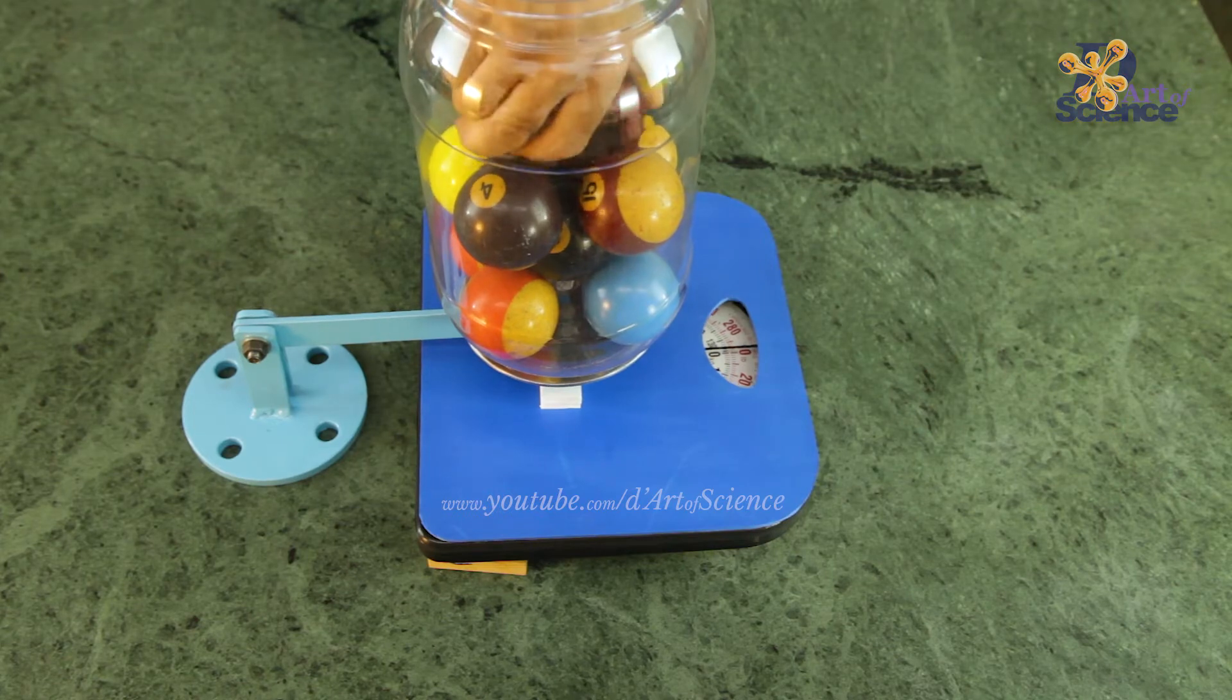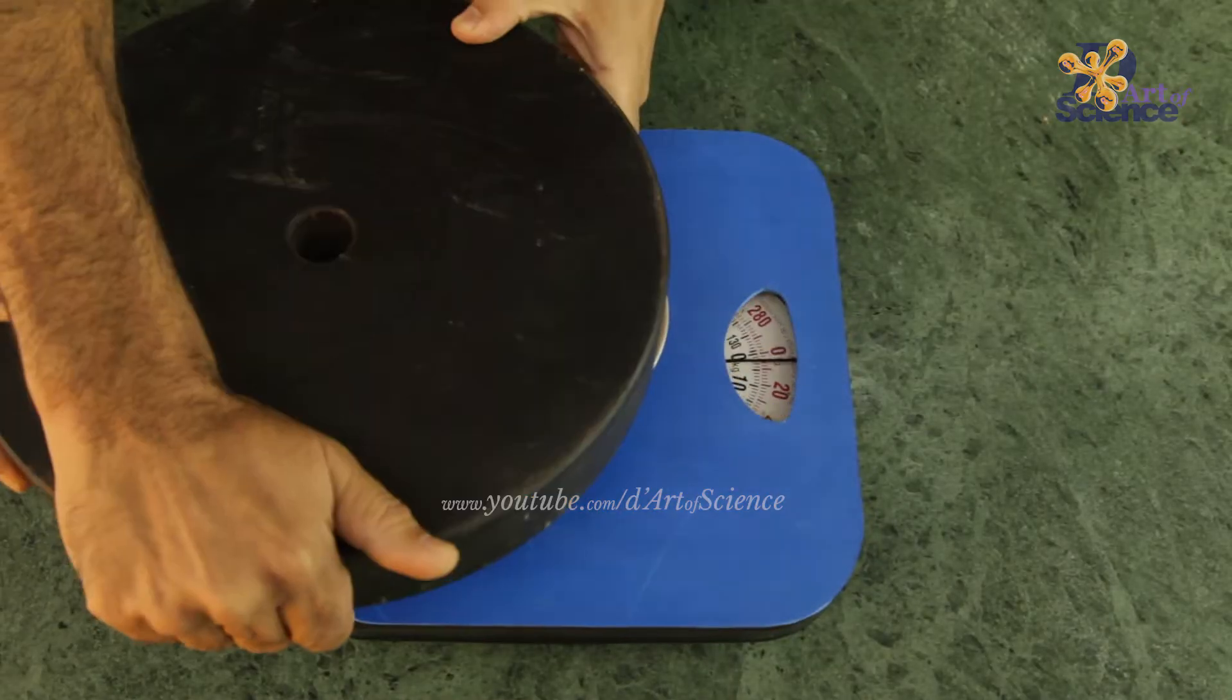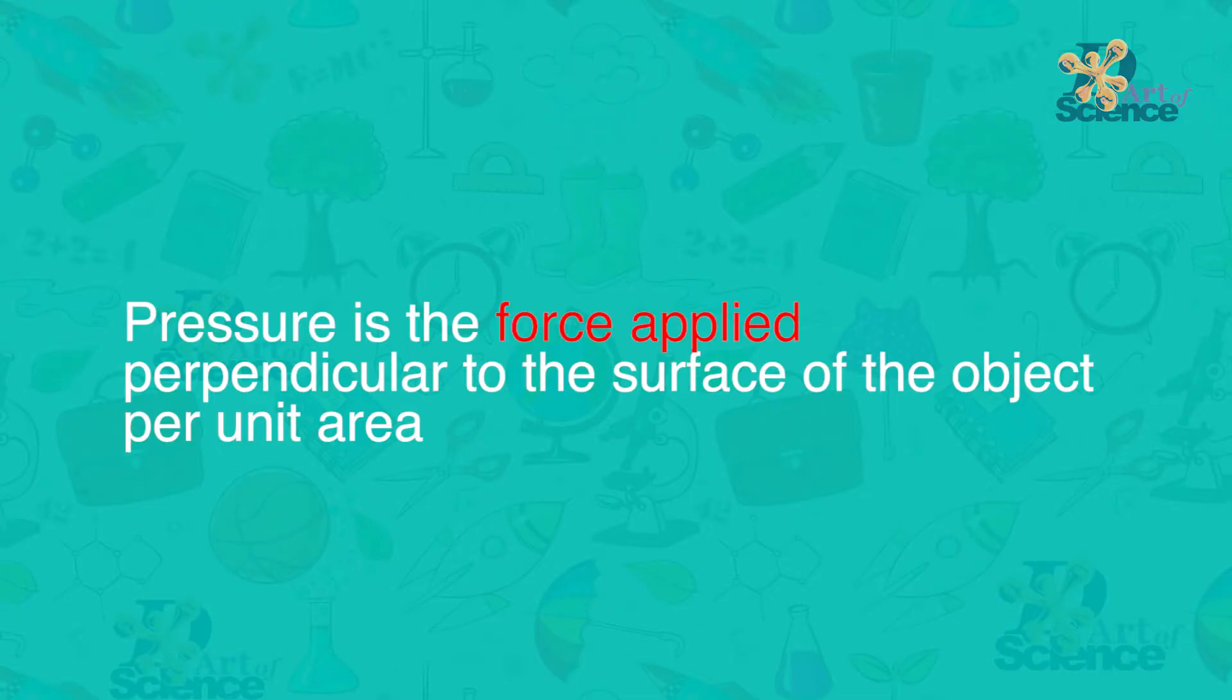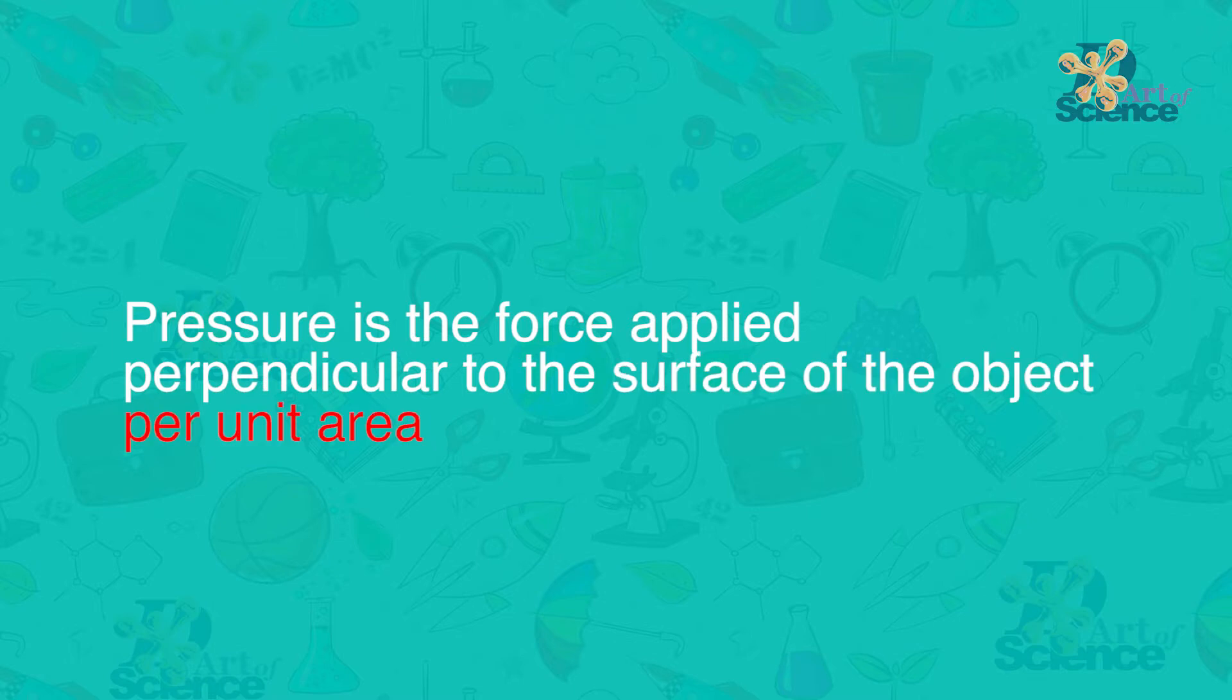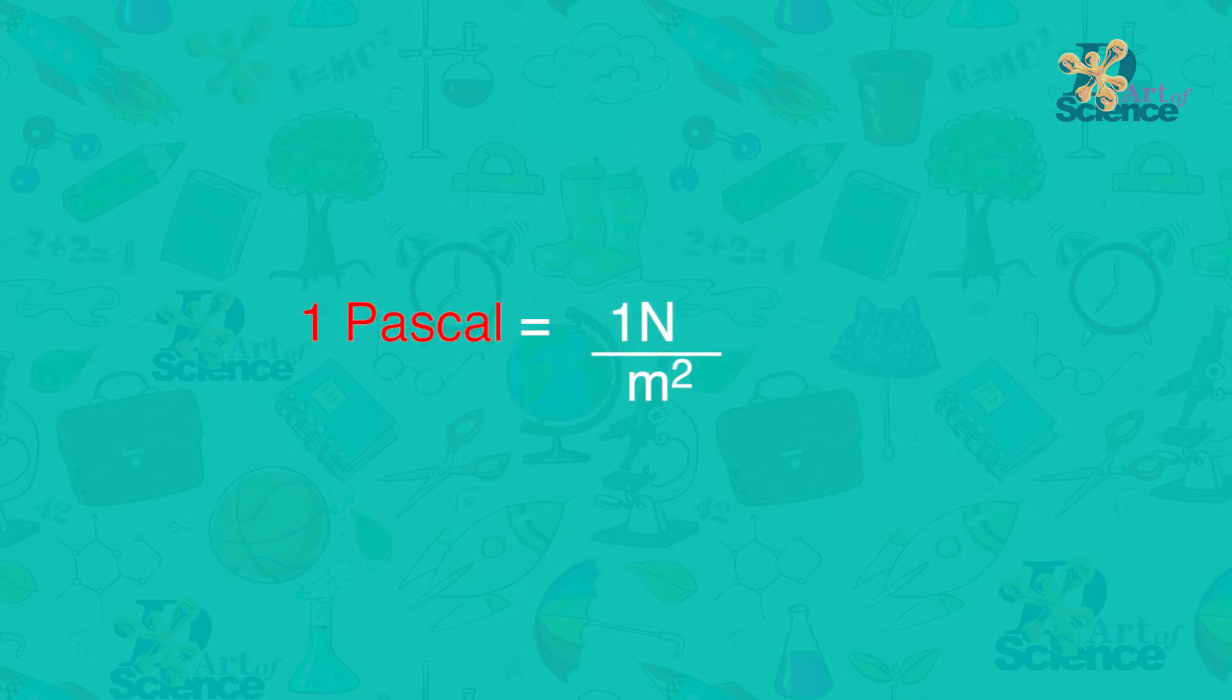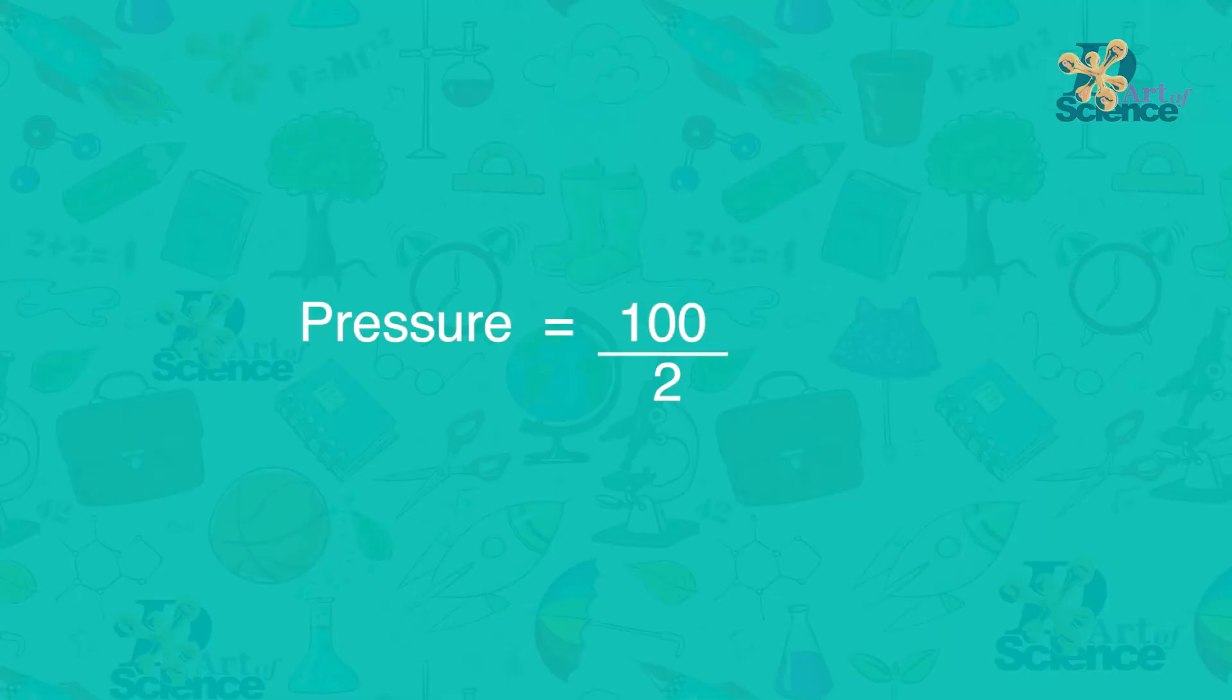Weight is also a force acting downwards. So in this experiment we showed that the force increased because of the increase of weight. Pressure is the force applied perpendicular to the surface of the object per unit area. Formula for pressure is force upon area on which it acts. The SI unit of force is Newton. The SI unit of area is square meter. Therefore the SI unit of measuring pressure is Newton per square meter and this is also called pascal. 1 pascal is 1 Newton per square meter. So as an example, if the force is 100 Newton and the area is 2 square meter then the pressure would be 100 divided by 2 that is 50 pascals.